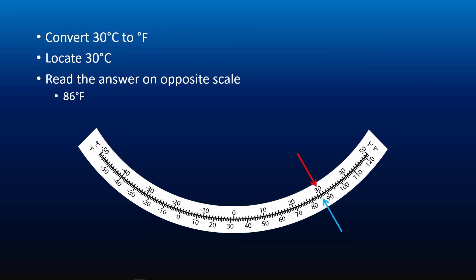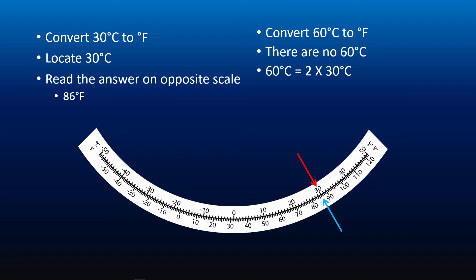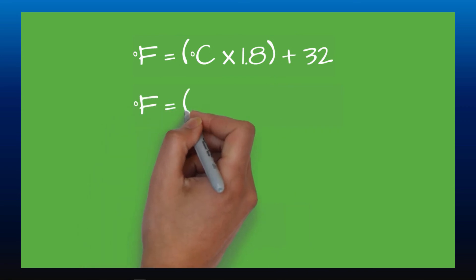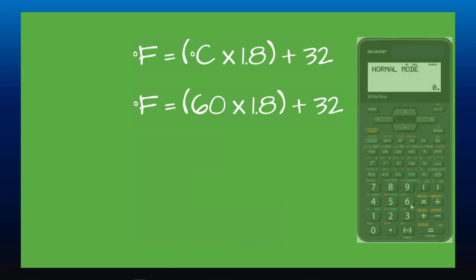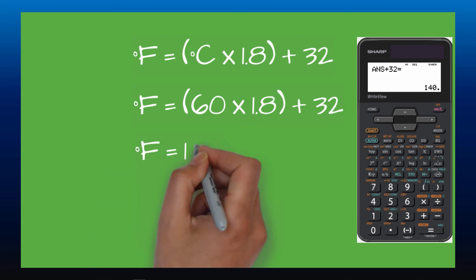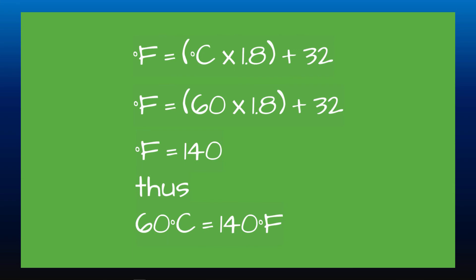The second example: convert 60 degrees Celsius to Fahrenheit. As you can see, there is no 60°C marking on the Celsius scale. One might think that since 60°C equals 2 times 30°C, then 60°C equals 86°F times 2, equals 172°F — but that is wrong. You cannot convert outside the scale linearly. You must use the formula: degrees Fahrenheit equals degrees Celsius times 1.8 plus 32. So degrees Fahrenheit equals 60 times 1.8 plus 32, which equals 140. Thus 60 degrees Celsius equals 140 degrees Fahrenheit.